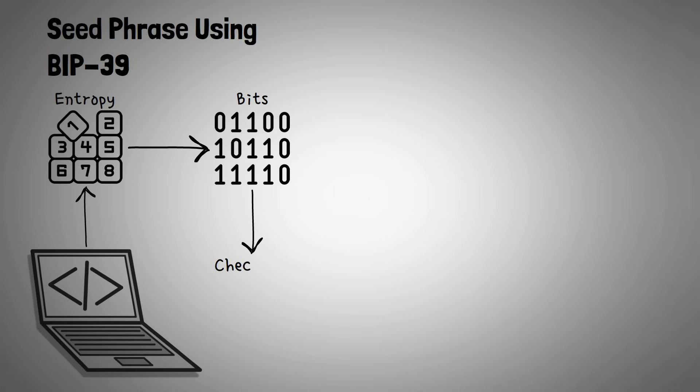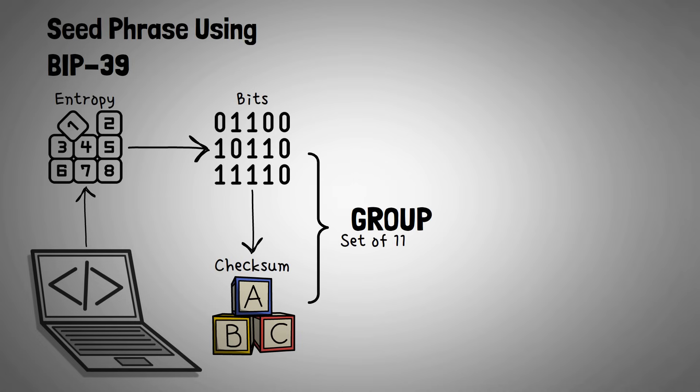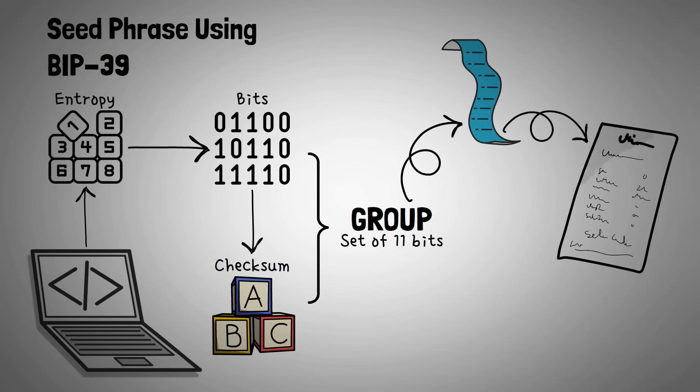Finally, the last word in a seed phrase is called a checksum, which is algorithmically checked and performed against the previous words generated and used to check for errors. This means you can't just come up with the last word of a seed phrase, a computer must generate it. The checksum is added to the end of the binary string. The software then groups these into bits of sets of 11, and each group matches a word from the list, and it becomes your mnemonic phrase.